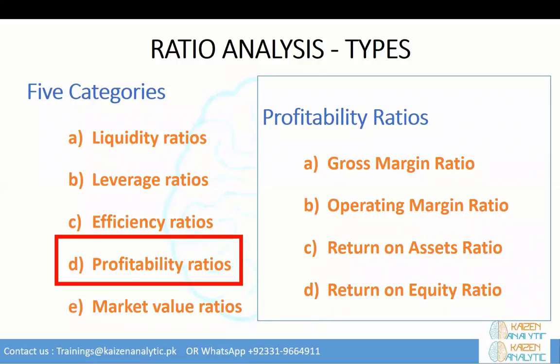Profitability ratios are commonly used for judging the ability of a company to generate income relative to revenues, balance sheet accounts, and other things. Common ones include: gross margin ratio, which compares gross profit to net sales; operating margin ratio, which compares operating income to net sales; return on assets ratio, measuring how effectively a company uses its assets to generate profit; and return on equity, measuring how effectively a company uses its equity to generate profit.